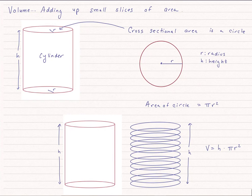So if I add up this infinite number of circles with height h, the volume is going to be h times that cross-sectional area or π r squared.